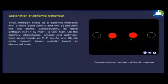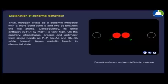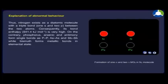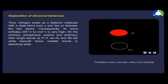Thus, nitrogen exists as a diatomic molecule with a triple bond between the two atoms. Consequently, its bond enthalpy is very high. On the contrary, phosphorus, arsenic and antimony form single bonds as P-P, As-As, and Sb-Sb, while bismuth forms metallic bonds in elemental state.